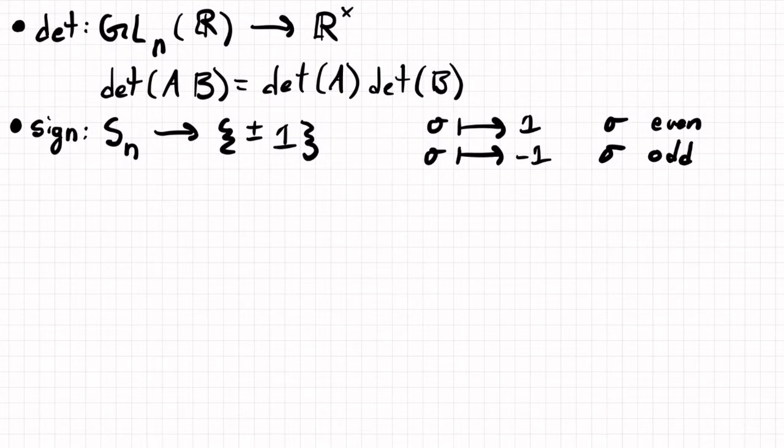So this is for sigma in Sn. And so this map is well defined because of the theorem that every permutation is either even or odd. And why is this a homomorphism?